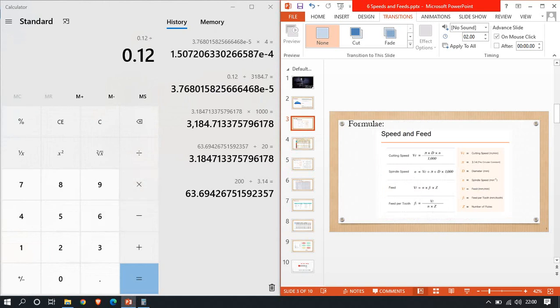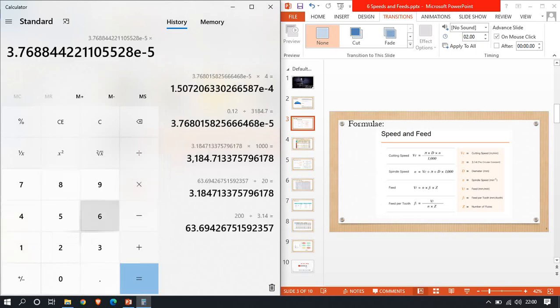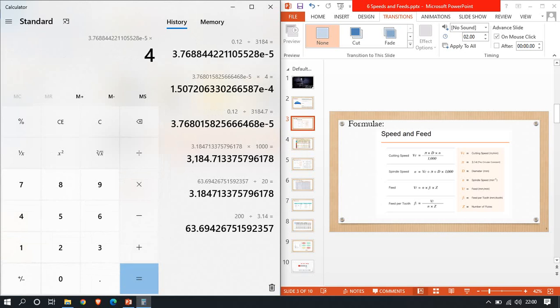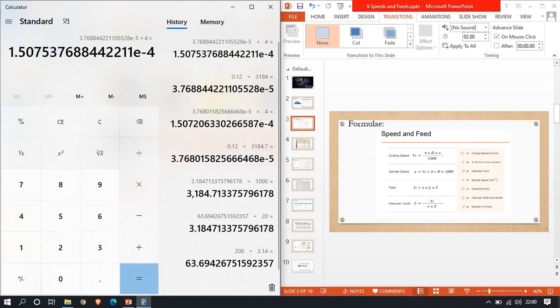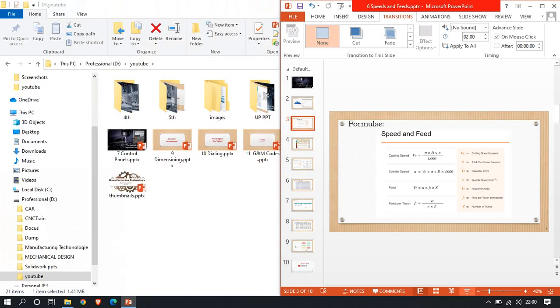So we have 0.12 divided by 3186 into number of flutes 4. This gives us 1.50. This is the feed per tooth value, 1.48. Now we've calculated the speeds and feeds.